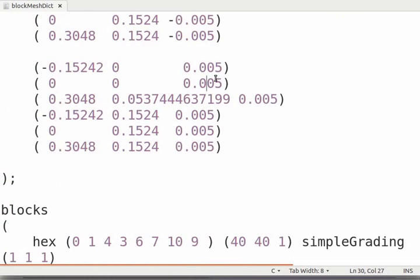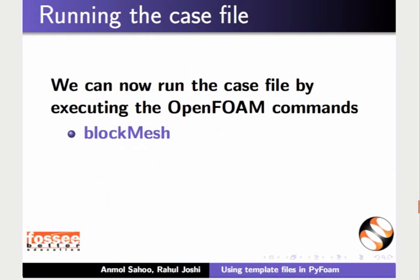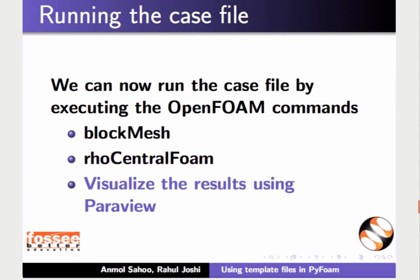Open the blockMeshDict file by typing gedit blockMeshDict and press enter. We had changed the wedge angle from 15 degrees to 10 degrees, and the endpoints of the slope have also changed. We can now run the case file by executing the OpenFoam commands blockMesh and rhoCentralFoam, and visualize the results using ParaView.